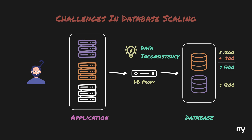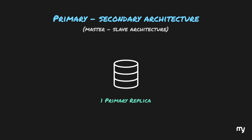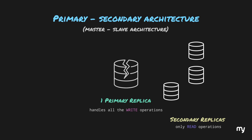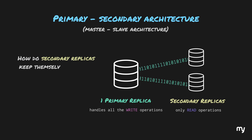One of the most widely used database architectures to address data consistency challenges is the primary-secondary architecture, sometimes also referred to as the master-slave architecture. In this setup, there is a single primary replica which exclusively handles all write operations, and multiple secondary replicas where read operations are distributed. If the primary replica crashes, one of the secondary replicas is promoted to primary. The secondary replicas are continuously updated with the latest changes from the primary, which brings us to the question: how do replicas keep themselves updated?